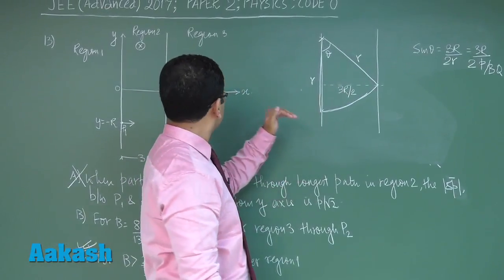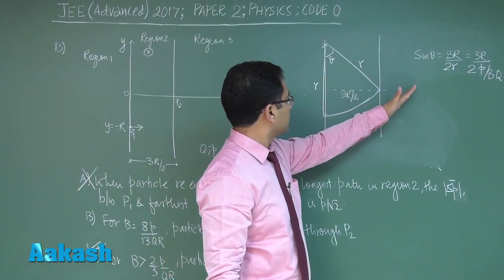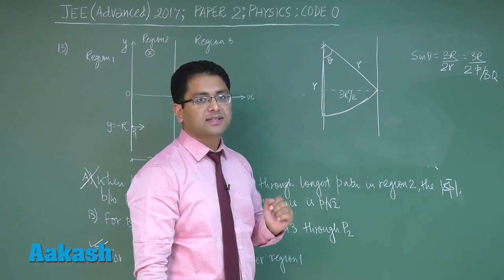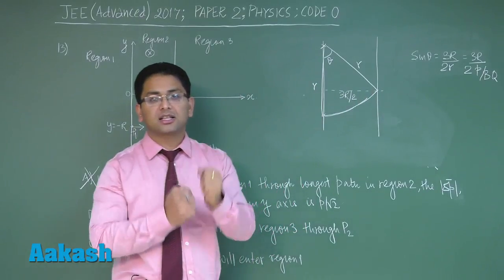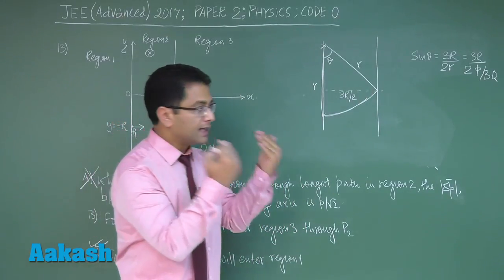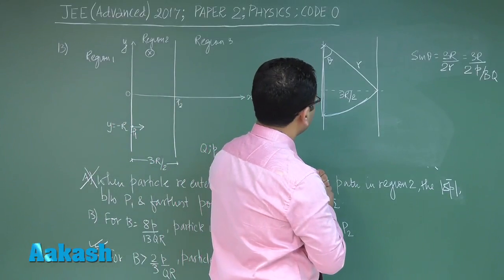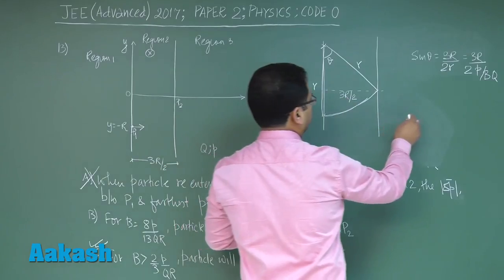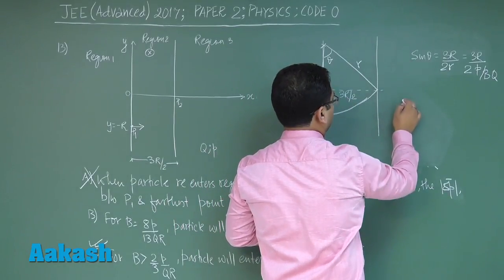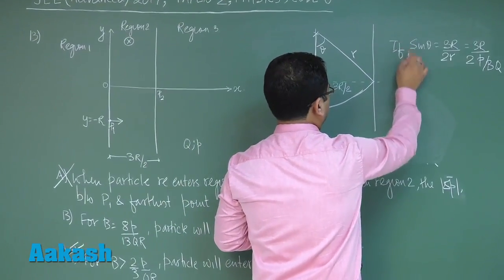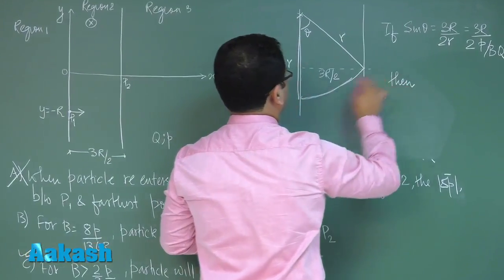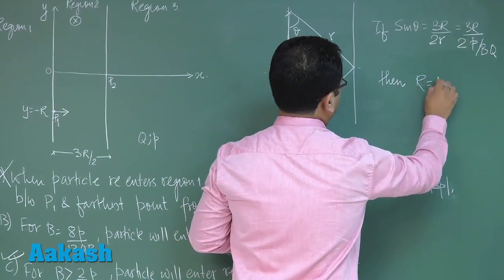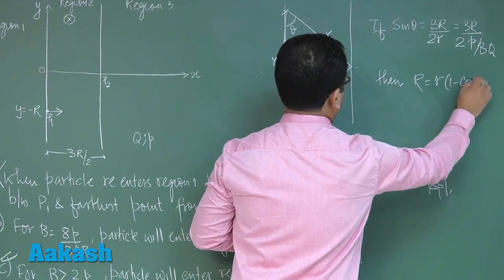That comes out to be sin theta, we'll put the value. Now if the particle enters region 3 at point p2, this would be the value of sin theta. Now we need to test the validity. If this claim is correct then there is one point of testing. Look, this distance is r. If this is true then straightforward you could see this is r. So r would be small r times 1 minus cos theta.